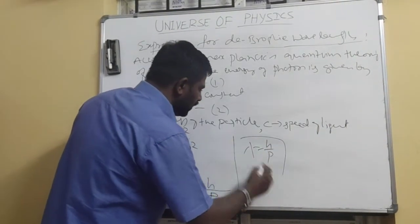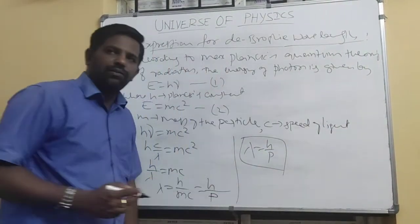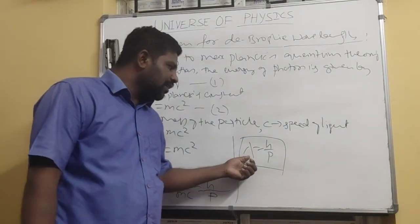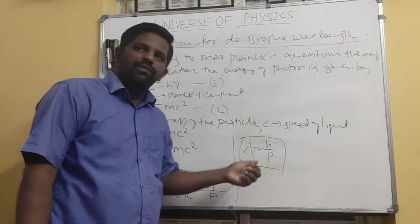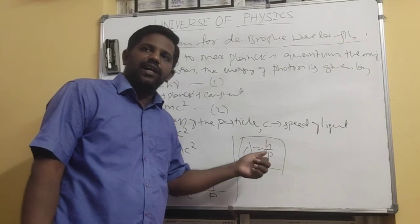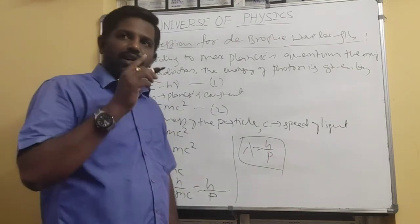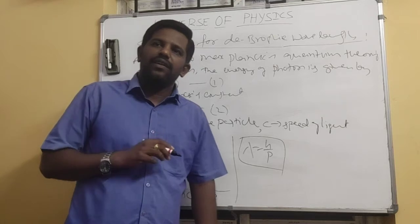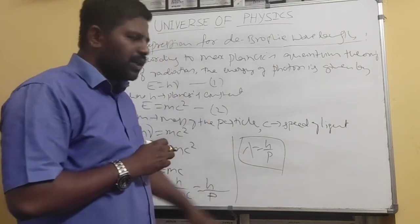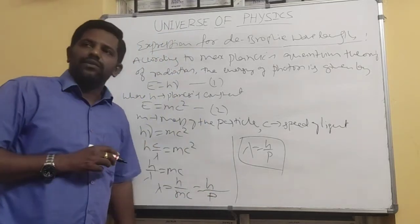λ = h/p. This is the expression for de Broglie wavelength, where λ is the de Broglie wavelength, h is Planck's constant, and p is the linear momentum — the product of mass and velocity.